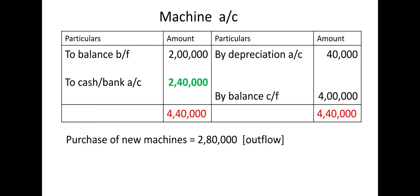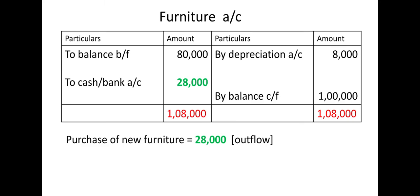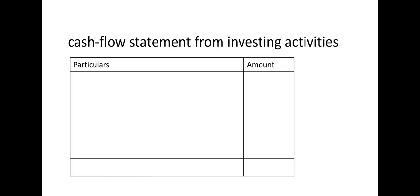Now furniture account — there is no major discussion needed, same as machine. At a glance: opening balance 80,000, 10% depreciation = 8,000, closing balance 1 lakh. The difference is 28,000 — so furniture worth 28,000 has been purchased, which is an outflow. So all three — investment, furniture, and machine — are complete, and we record those activities in the cash flow statement.